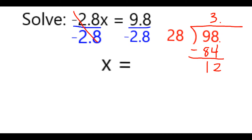To set up that division using only positive numbers, it's basically how many times does 28 go into 98. Note that because they both have the same decimal in the same place, I can just move it over effectively in both.